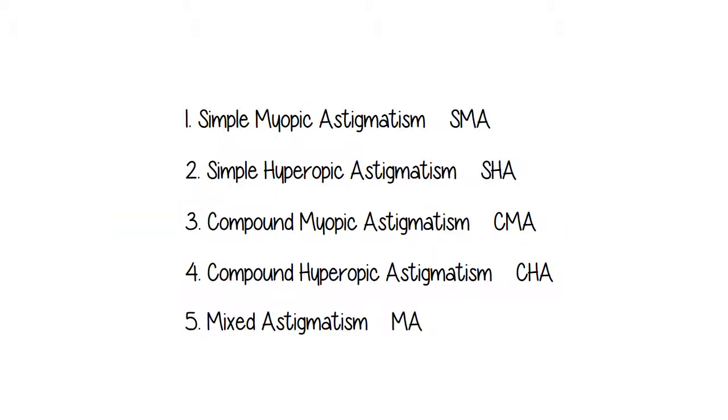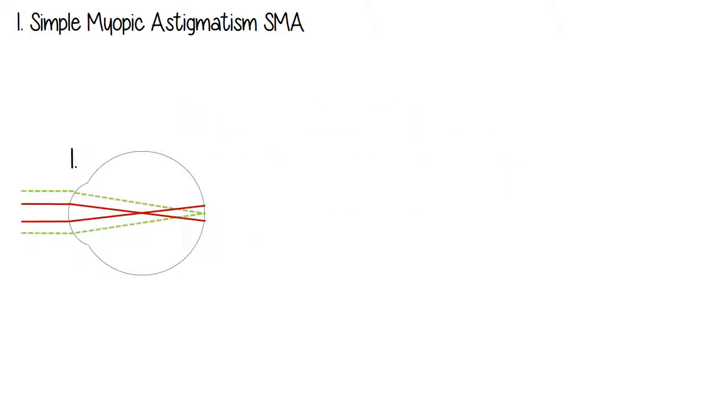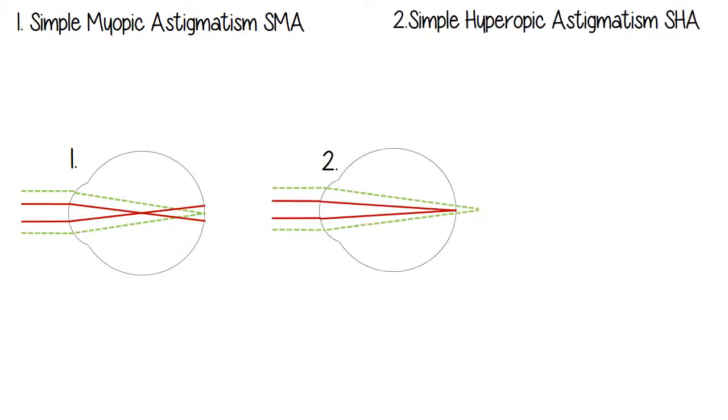Okay, remember the five types of astigmatism? Where as far as the focal line, simple myopic, one falls in front of the retina, one falls on the retina. Simple hyperopic, one falls behind the retina, one falls on the retina.